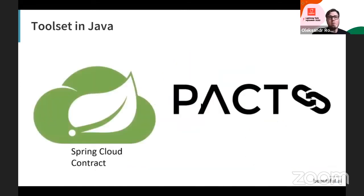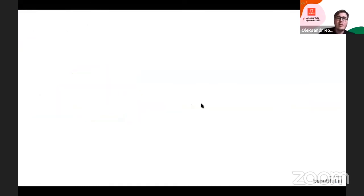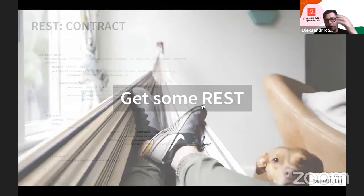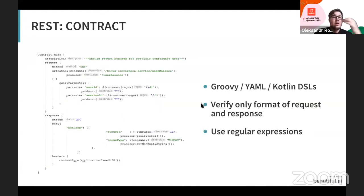In Java, we have two tool sets for contract testing: Spring Cloud Contract and PACT. Today I'll show examples using Spring Cloud Contract. When talking about how to define contracts, it can be implemented using Groovy, YAML, or Kotlin DSL.